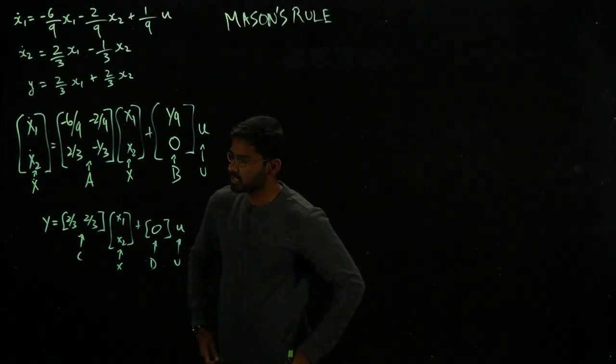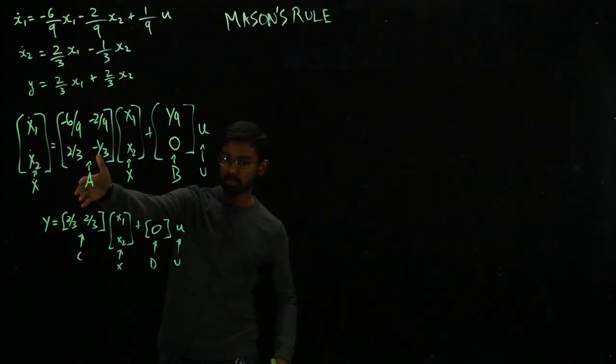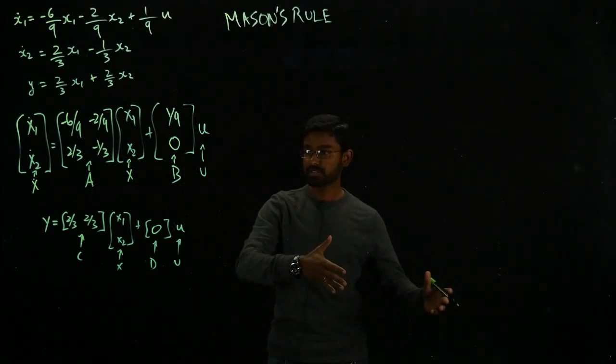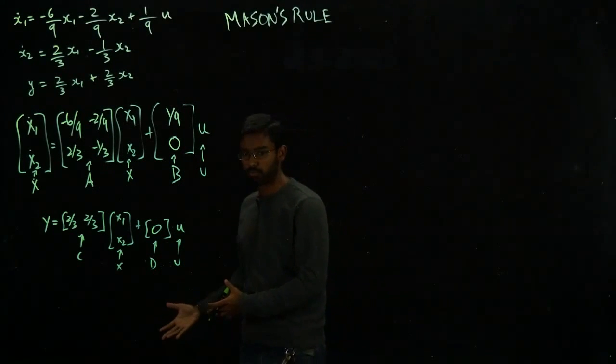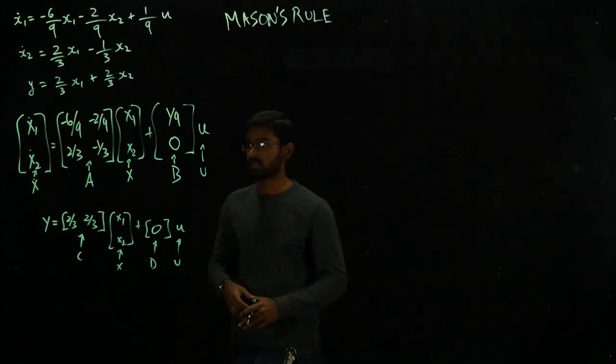There are many ways to represent this. First of all Mason's rule, what it does is it converts your signal flow graphs into transfer functions. That's what it does. So it gives you a guideline from going from signal flow graphs to transfer functions.